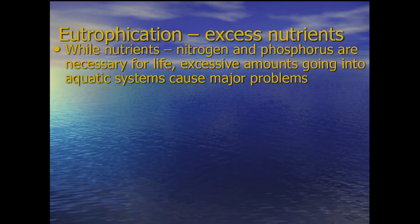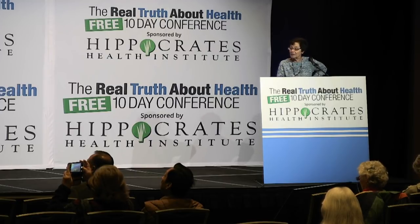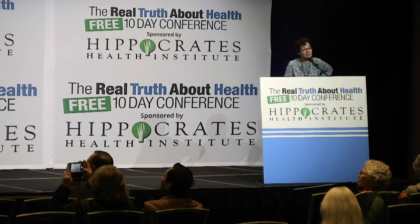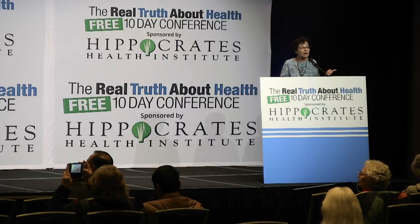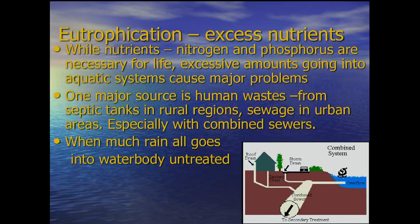In marine and estuarine environments, nitrogen is the major problem. The major sources include human waste from septic tanks, from sewage treatment, and also waste from farms like fertilizers and manure. When there's too much, it goes into the water and can cause problems. In urban areas such as New York City and other older cities, there are what's called combined sewer systems.